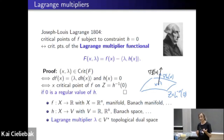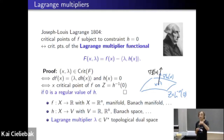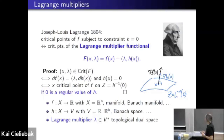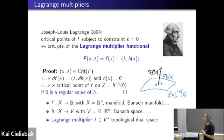A pair (x, λ) being a critical point of capital F means: first, x lies on the level set where h equals zero; and second, the differential of f is a multiple of the differential of h, which precisely means x is a critical point of f restricted to the constraint h-inverse of zero. Here I'm implicitly assuming zero is a regular value of h. This can be done where both are functions from R^n to R, but also in more general settings where the domain x could be a manifold or a Banach manifold.